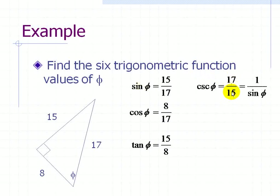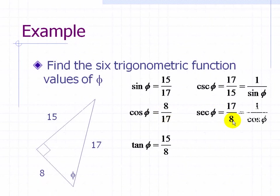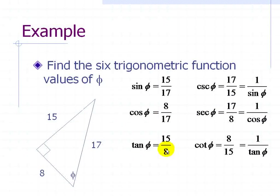The secant of phi is the reciprocal of the cosine of phi, or 17 over 8 — the hypotenuse over the adjacent side. We can see the reciprocal relationship: 1 over the cosine of phi equals the secant of phi. The cotangent of phi is the reciprocal of the tangent of phi, or 8 divided by 15 — the adjacent side divided by the opposite side.